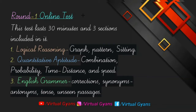You can also go through other important topics. In quantitative aptitude, topics asked include combinations, probability, time distance and speed, and many other topics. In English grammar, they ask questions from error correction, synonyms, antonyms, tenses, and unseen passages. These topics are very important for the Infosys online test round.